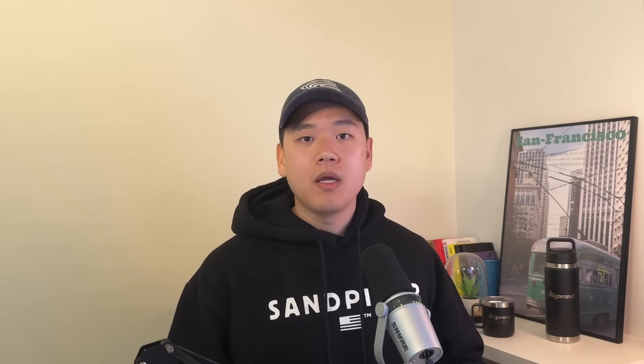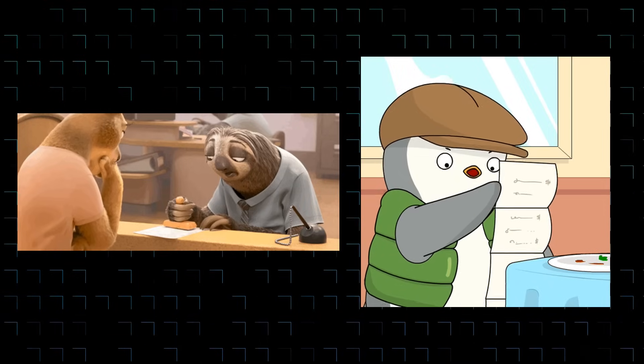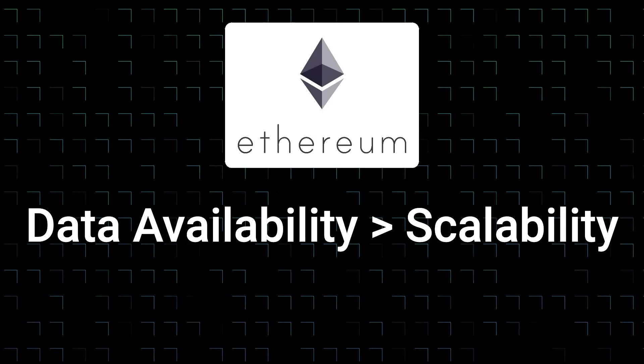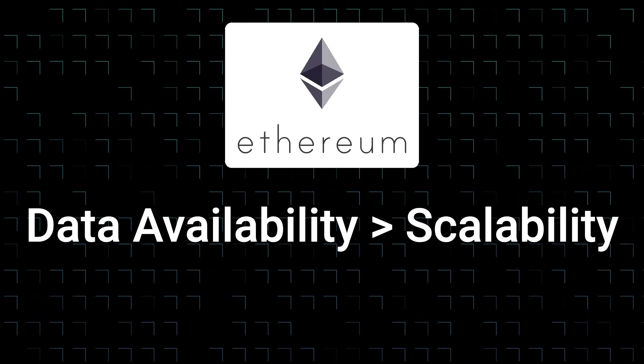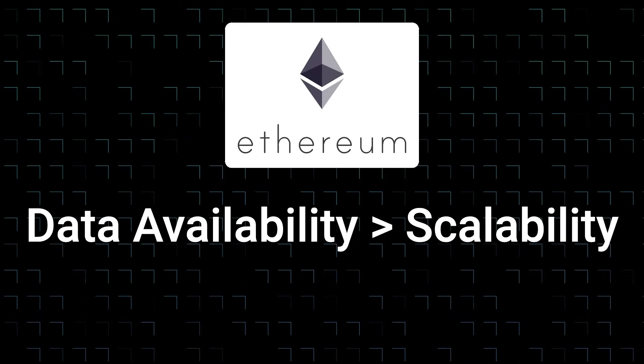On Ethereum, if a smart contract needs to access certain data from the blockchain ledger, the query accesses the entire ledger and finds the data from it. It's great that you have access to the entire ledger all the time, but it's also slow and expensive to complete that search as you're trying to find certain data from the entire ledger. So in short, Ethereum prioritizes open data availability over scalability.